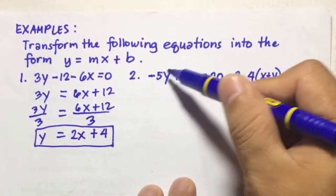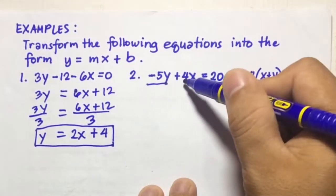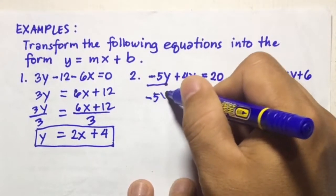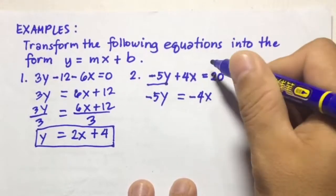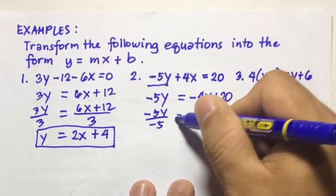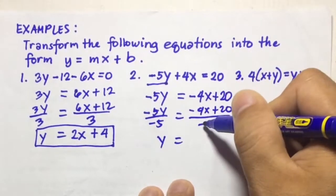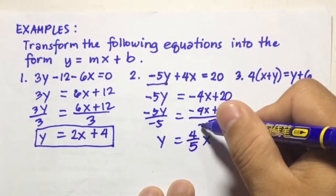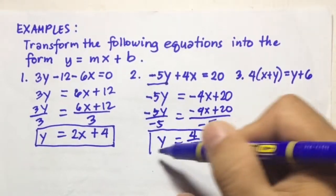Number 2: negative 5Y plus 4X equals 20. We keep the Y term on the left and transpose 4X to the right side, giving negative 5Y equals negative 4X plus 20. Dividing both sides by negative 5, we get Y equals 4 over 5 X, and 20 divided by negative 5 is negative 4. So the answer for number 2 is Y equals 4 over 5 X minus 4.